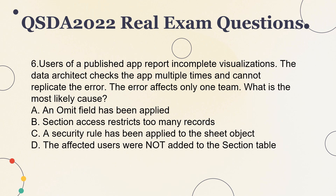Question 6. Users of a published app report incomplete visualizations. The data architect checks the app multiple times and cannot replicate the error. The error affects only one team. What is the most likely cause? A. An omit field has been applied. B. Section access restricts too many records. C. A security rule has been applied to the sheet object. D. The affected users were not added to the section table.